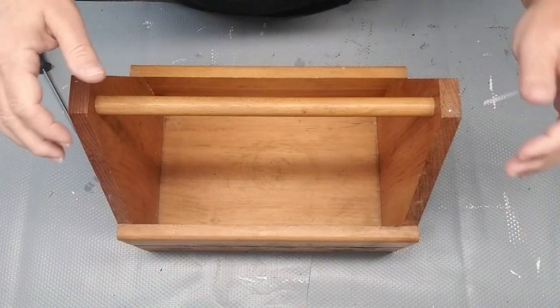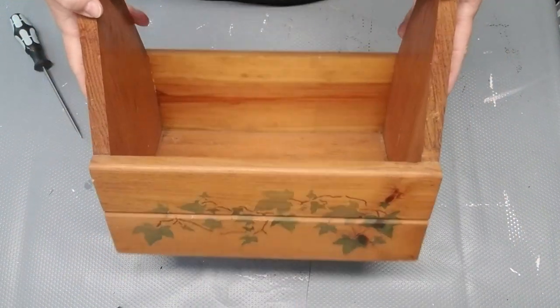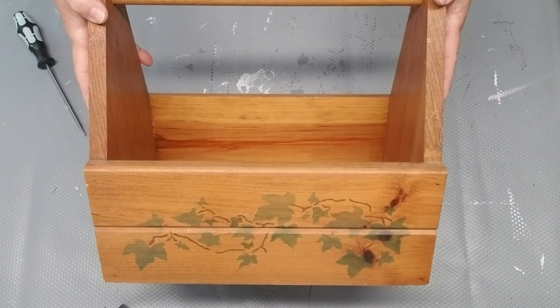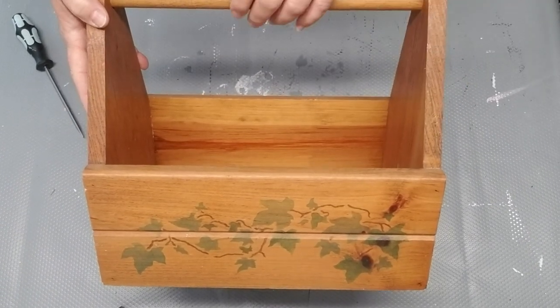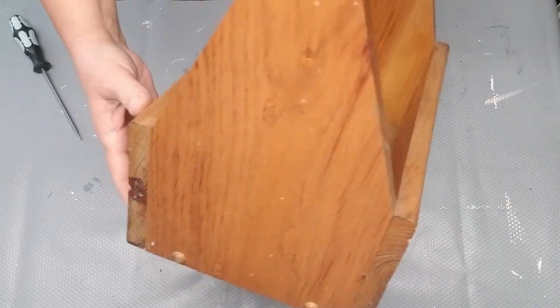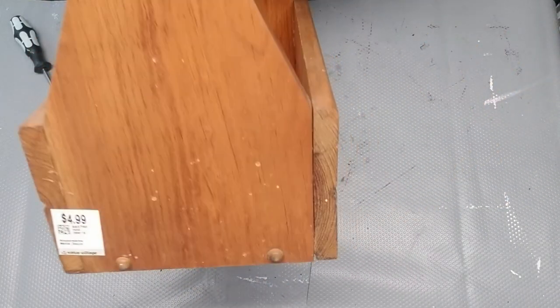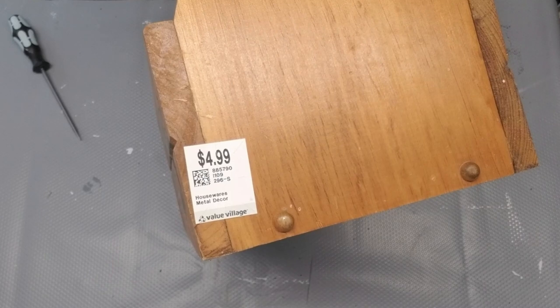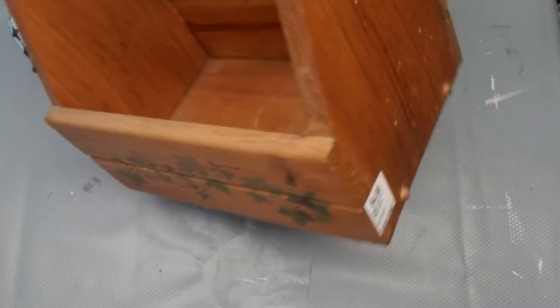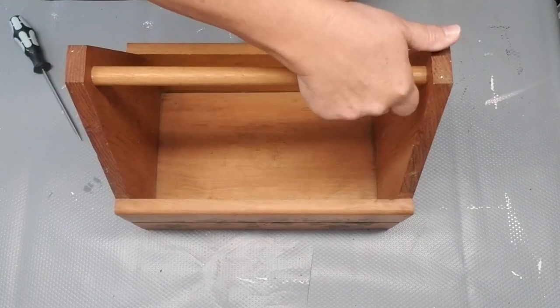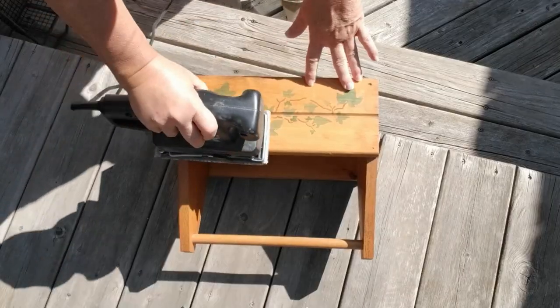This is a wooden toolbox caddy that I picked up at the thrift store for $4.99. Look at those pretty little ivy leaves. It's actually not a bad looking crate. It's in really good shape and I decided that instead of painting it white this time, I'm going to do something different and preserve the look of the wood.